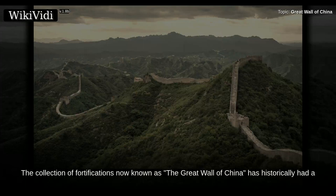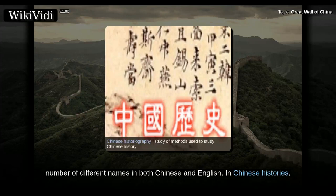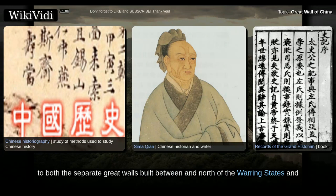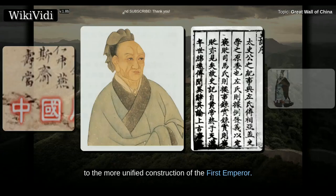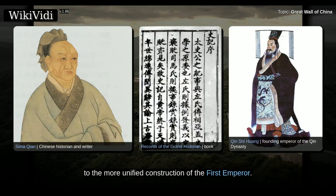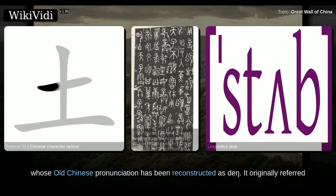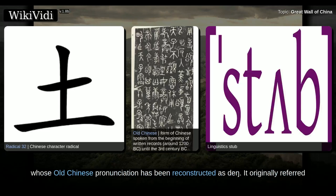The collection of fortifications now known as the Great Wall of China has historically had a number of different names in both Chinese and English. In Chinese histories, the term 'Long Wall' appears in Sima Qian's Records of the Grand Historian, where it referred to both the separate great walls built between and north of the warring states and to the more unified construction of the first emperor. The Chinese character is a phonosemantic compound of the place or earth radical, whose old Chinese pronunciation has been reconstructed as 'Den.'